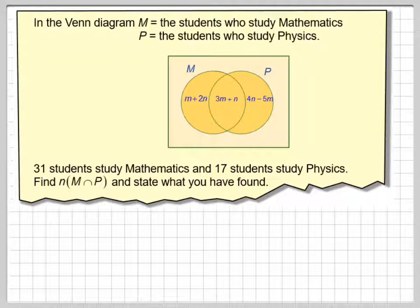31 students study mathematics and 17 study physics. Find n(M∩P), M intersection with P, and state the value of what you have found.